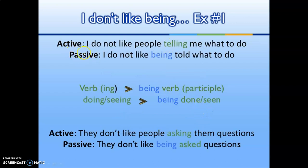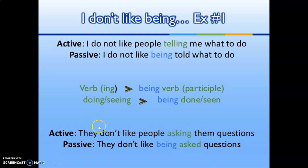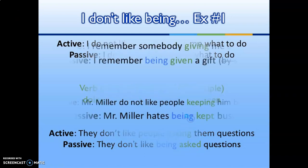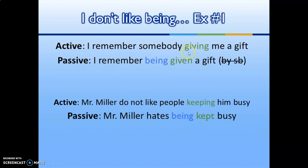Active to passive with 'being': Active: 'I don't like people telling me what to do.' Passive: 'I don't like being told what to do.' With verb + -ing, use 'being' + past participle. More examples: 'They don't like people asking them questions' → 'They don't like being asked questions.' 'I remember somebody giving me a gift' → 'I remember being given a gift.' 'Mr. Miller doesn't like people keeping him busy' → 'Mr. Miller hates being kept busy.'